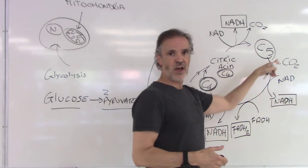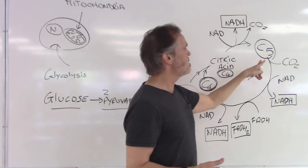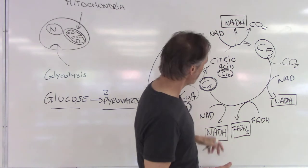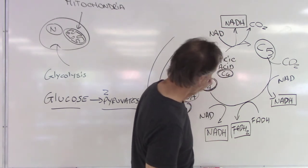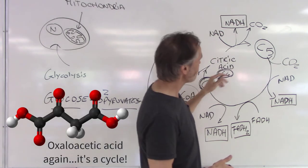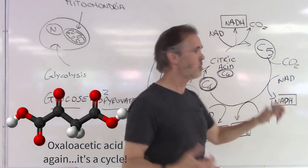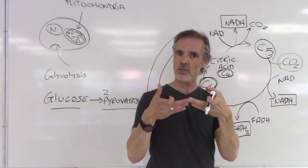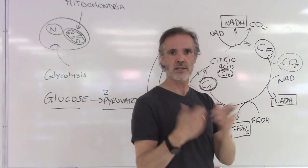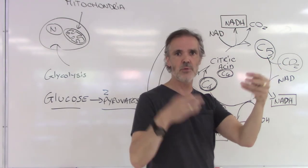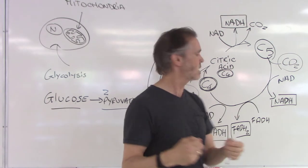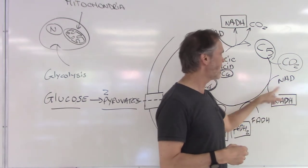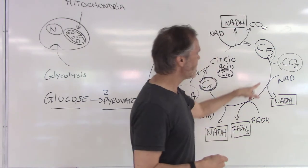This five-carbon molecule is now converted again into a four-carbon molecule — here it is, a four-carbon molecule right here. What happens to the carbon? We create carbon dioxide again. What happens to the electron found inside that carbon bond between the five-carbon and four-carbon molecule? It is captured by NAD+ into NADH again.